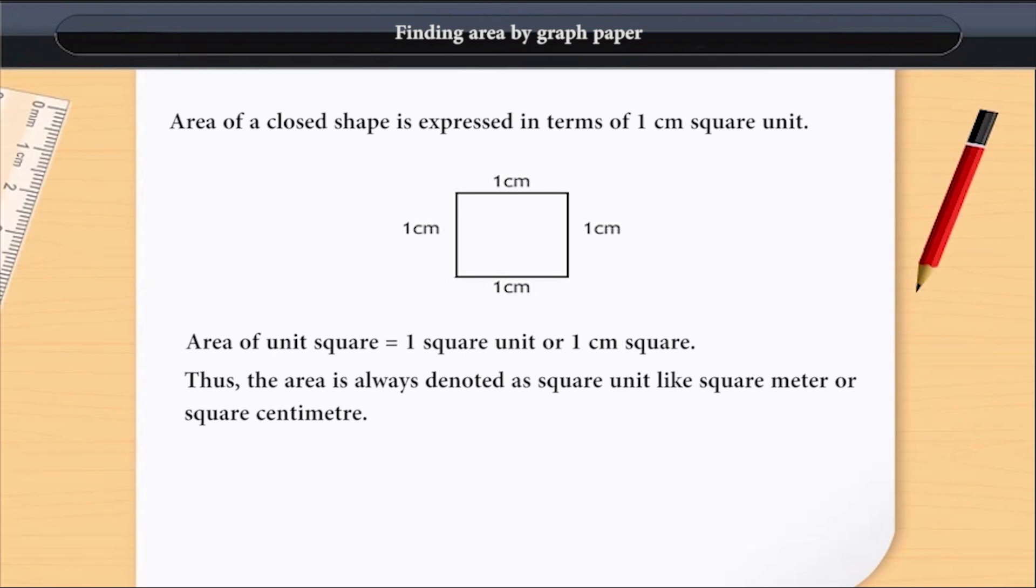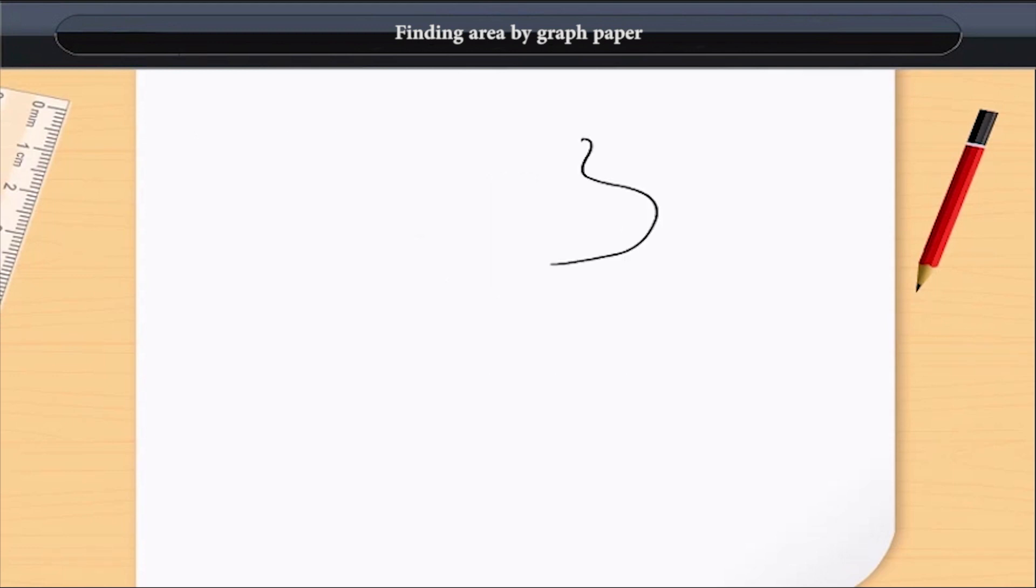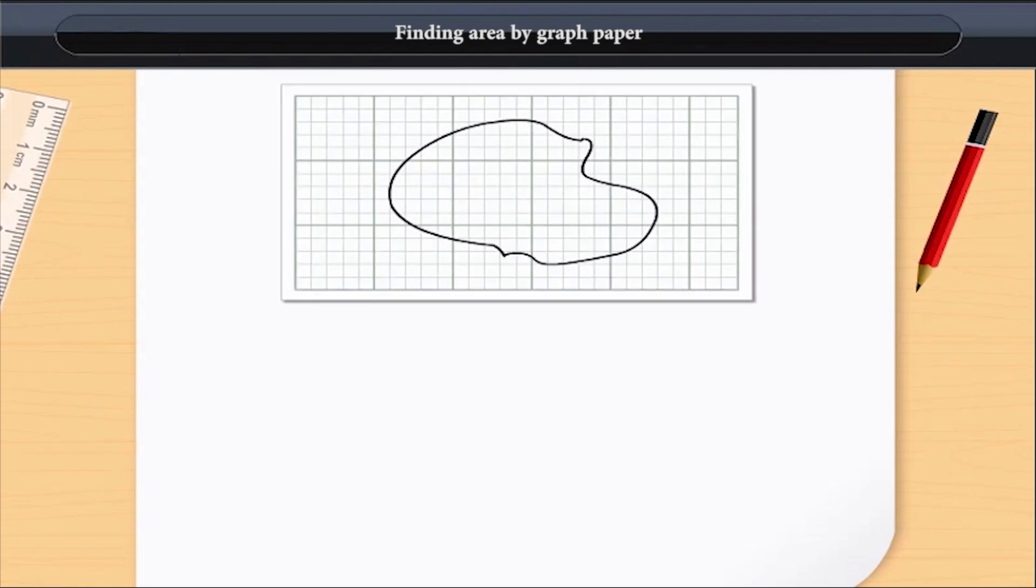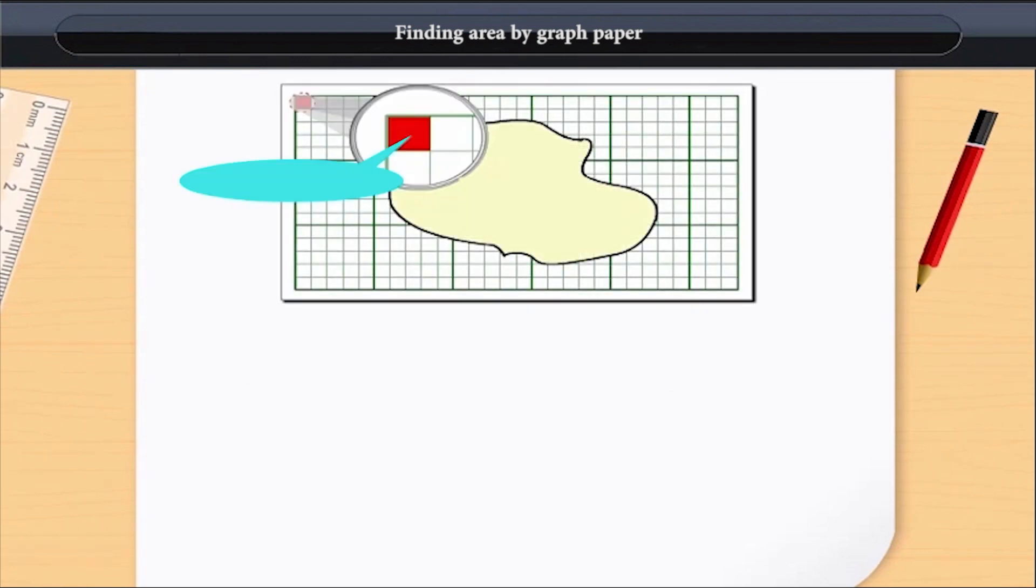Thus, the area is always denoted as square unit like square meter or square centimeter. To know the area of any closed shape, we put it on a graph paper.